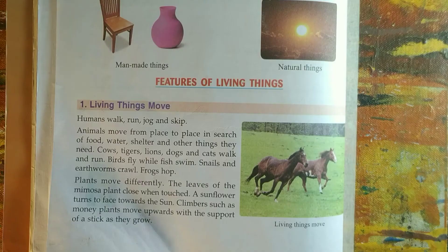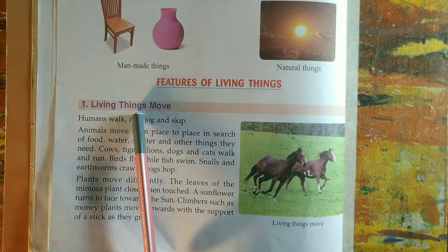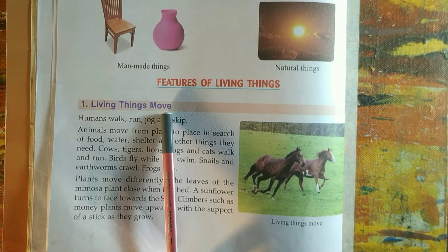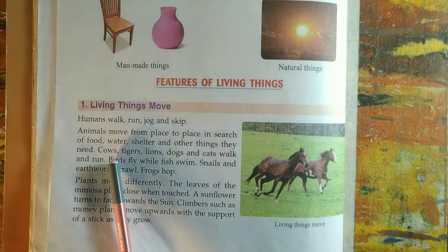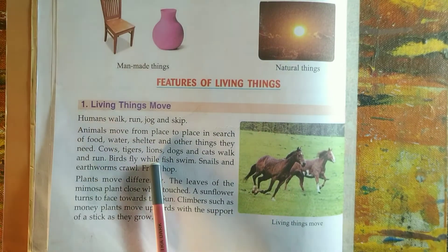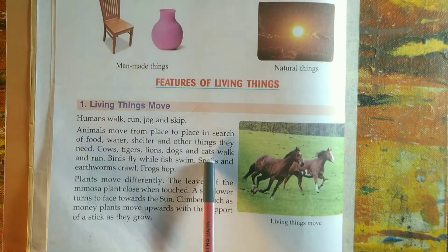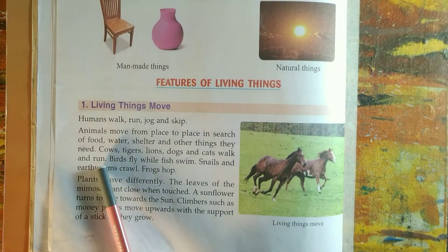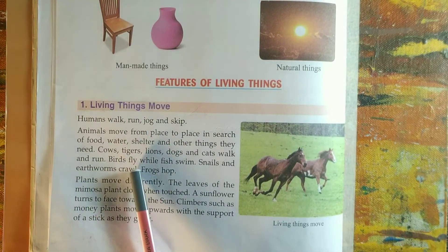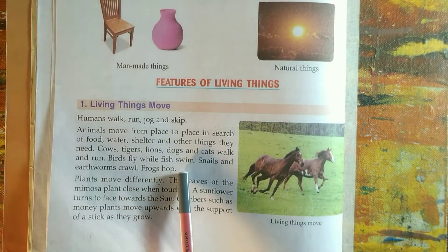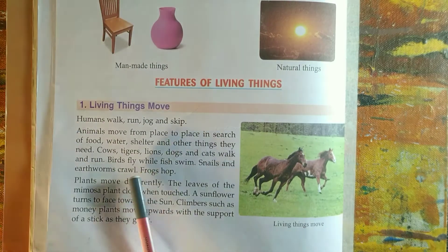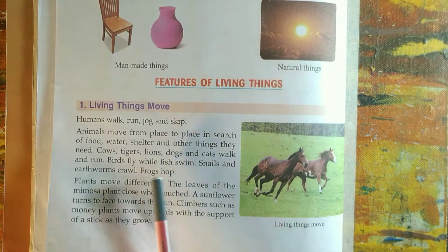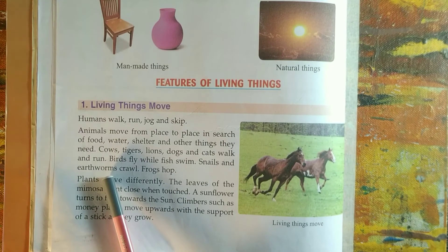Let us study about the different features of living things. All living things move. Animals like cows, tigers, lions, dogs and cats can walk and run. Birds fly, fish swim, and those who cannot walk and run, they crawl. For example, snails and earthworms.